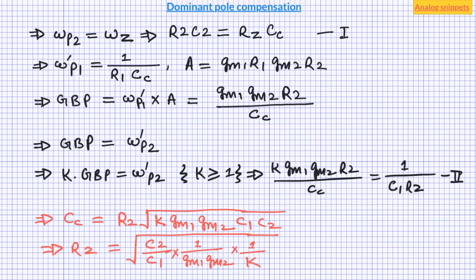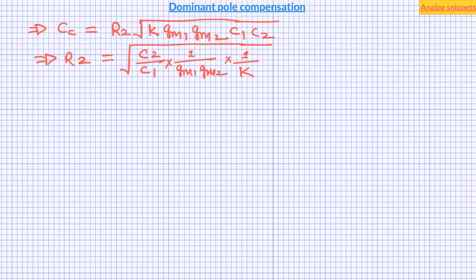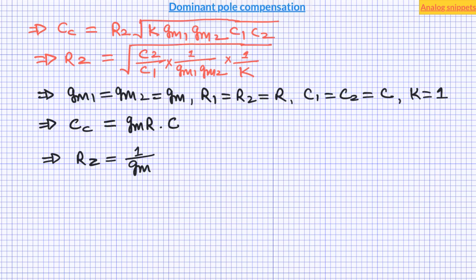In order to develop better insight, let's do some simplifications. Let's assume that the first and second stage amplifiers are exactly identical and that parameter k is 1. After making these assumptions, we find that the compensation capacitance value is gain times the stage capacitor, and the zero resistance value is just the inverse of gm. In general, the compensation capacitance will be hundreds of times larger than the stage capacitors, and the zero resistance value will be a few kilohms to tens of kilohms. So we see that the assumptions we made in deriving the pole-zero equations are mostly valid.